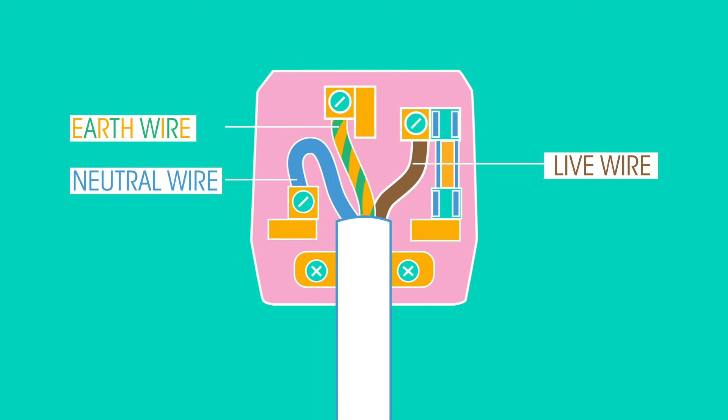The brown live wire and the blue neutral wire carry the current around the circuit. The live wire is the route into the plug for the electric current. The current is alternating current, which travels back and forth approximately 50 times a second.